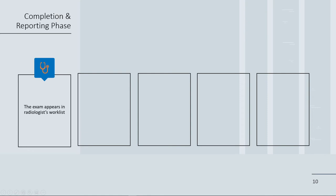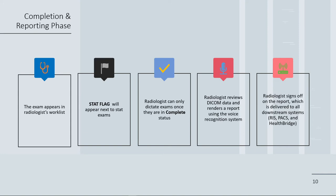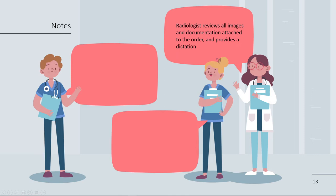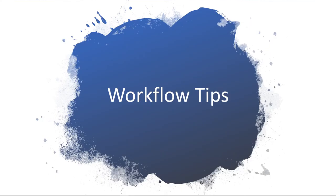Lastly, let's take a look at the completion and reporting phase. Once exams are sent for interpretation, they appear in the radiologist's worklist. Any STAT exams will have a STAT flag next to them. Radiologists are only able to dictate exams once they are placed in the complete status. The radiologist then reviews the DICOM data and renders the report using the voice recognition system. Finally, the radiologist signs off on the report, which is then delivered to all downstream systems such as RIS, PACS, and HealthBridge. During the complete phase, the radiologist reviews all images and documentation attached to the order and provides a dictation. For resident dictations, the study will appear as provisional in RIS and dictated in PACS. When an attending radiologist signs a report, the report then becomes finalized. Please remember that final reports are legal documents and cannot be deleted; therefore, any modifications will require an addendum.